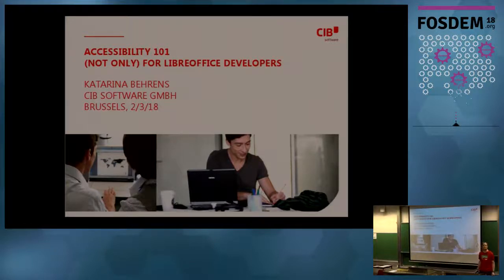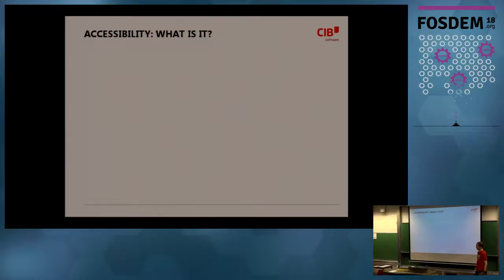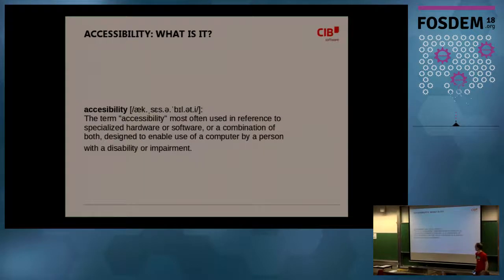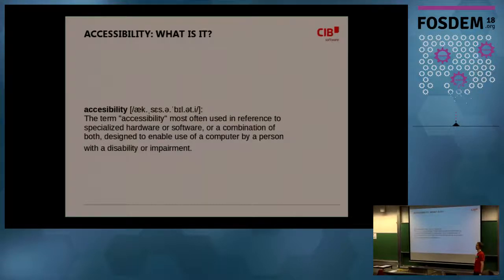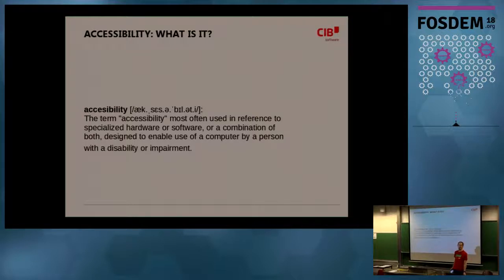First of all, accessibility — who knows what that is in this context? Let's check Wikipedia. In the context of software, it's mostly used for technology or some part of a program that is there to make a computer or a technical device usable by, or easier to use by, a person with a disability or impairment. These days we try to avoid saying disabilities, so we rather talk about accessible software, accessible rooms, accessible restrooms — that's accessibility in this context.